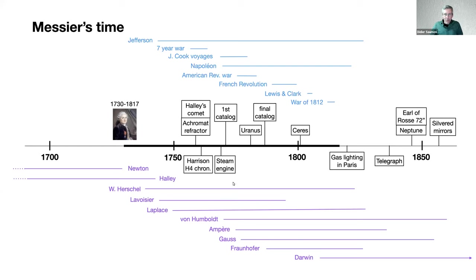Messier's time was characterized by a few interesting technologies. There was a great effort to develop chronometers — clocks that could be taken on ships and were essential to determine longitude while at sea. The challenge was to make a clock that would keep time accurately despite great changes in conditions, weather, and the motion of the ship. The steam engine was invented around 1760, the dawn of the industrial revolution. Interestingly, during his entire life there was no light pollution in Paris, as gas lighting was only installed a few years after he passed away. So he did his observations under a perfectly dark sky.